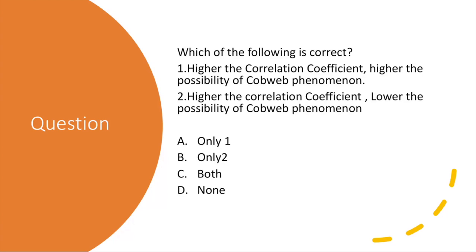Quiz question: Which of the following is correct? A — higher the correlation coefficient, higher the possibility of the Cobweb phenomenon. B — higher the correlation coefficient, lower the possibility of the Cobweb phenomenon. The right answer is A only. We have seen that the correlation coefficient is not good — higher the correlation coefficient, higher is the possibility of the Cobweb phenomenon.